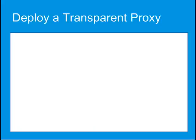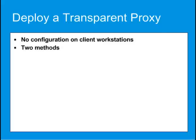With the transparent proxy deployment, you can configure your ProxySG appliance to control and filter traffic for users without having to do any configuration on the client workstations. Two methods can be used to send traffic to your ProxySG appliance transparently: physically in-path and virtually in-path.